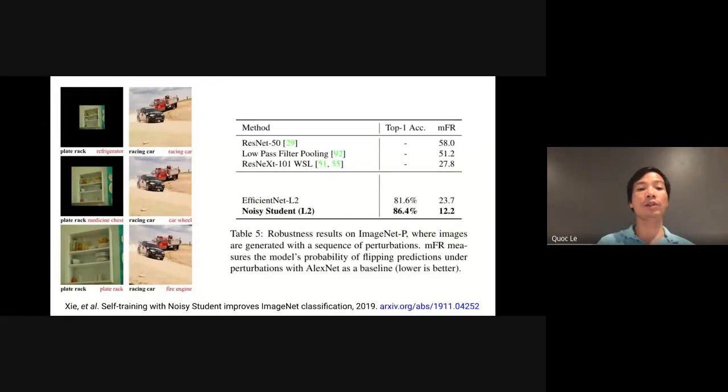Finally, on the ImageNet-P test set, which consists of images transformed into video sequences to test how sensitive the classifier is from one frame to another. Here, the main metric is mean flip rate, which measures how much the classifier flips its predictions. A normal ResNet will flip around 58% of the time, whereas our method only flips 12% of the time, which means it's more invariant to input transformations. 12% is significantly better than the 58% from ResNet.